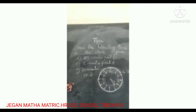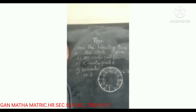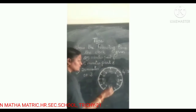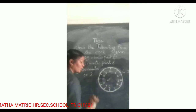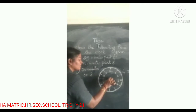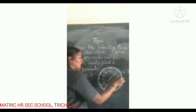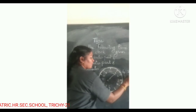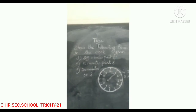Next: five minutes past eight. Same thing. First draw the hour hand on eight. And the minute hand on one. So the time is eight oh-five.